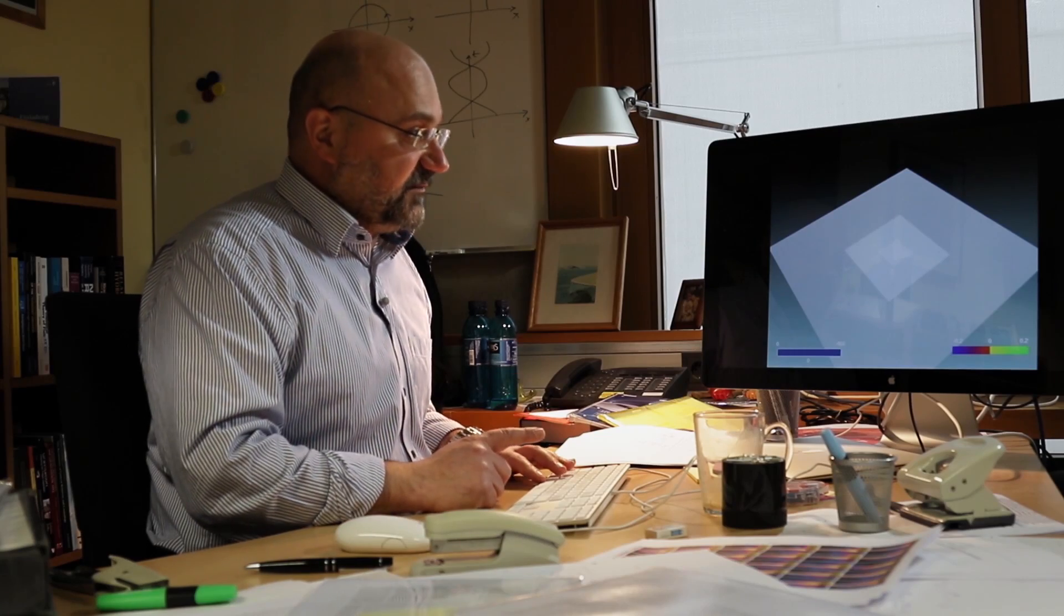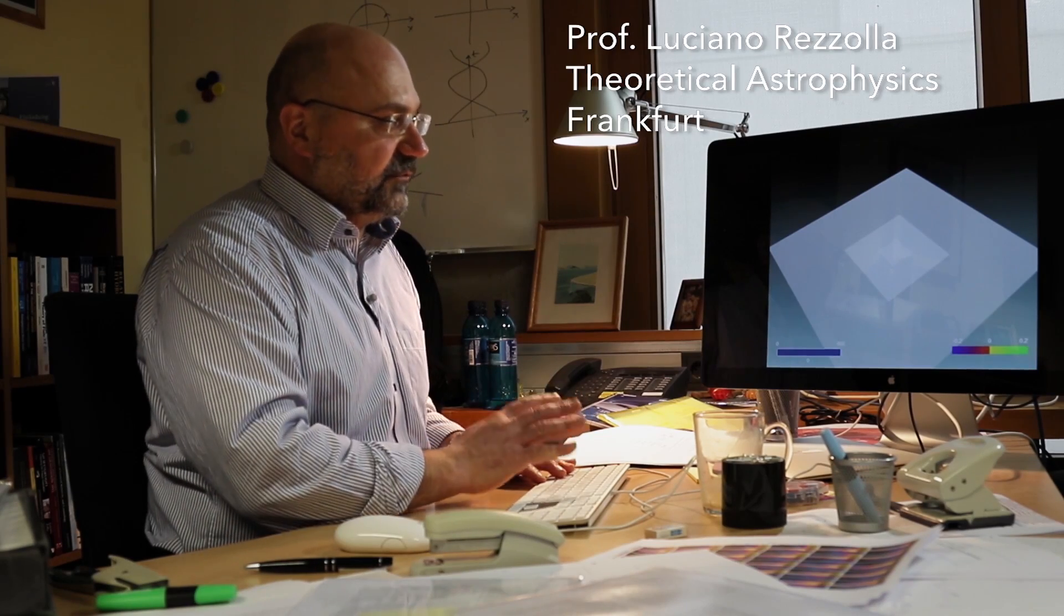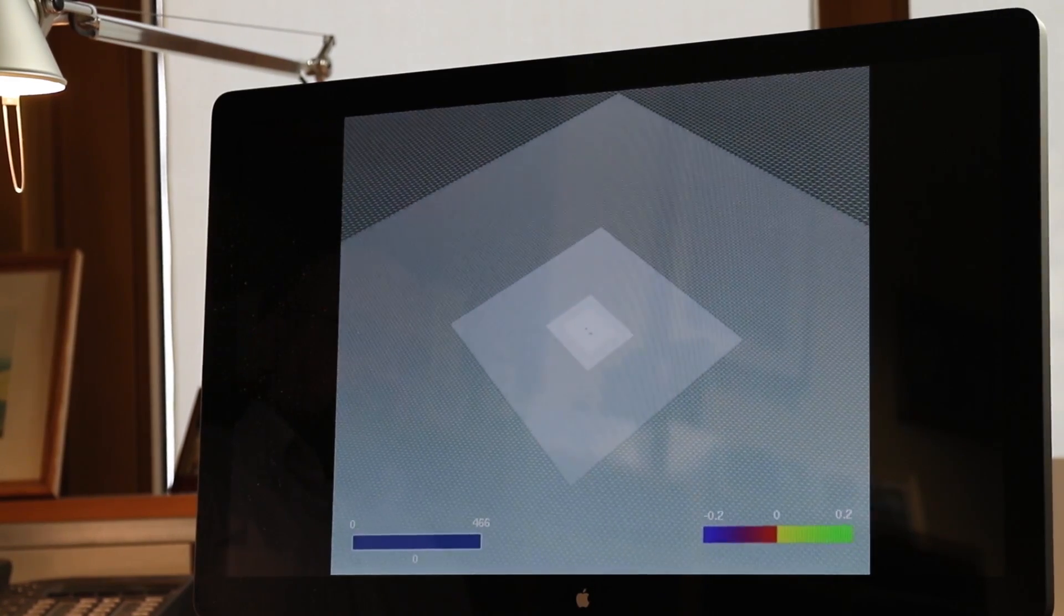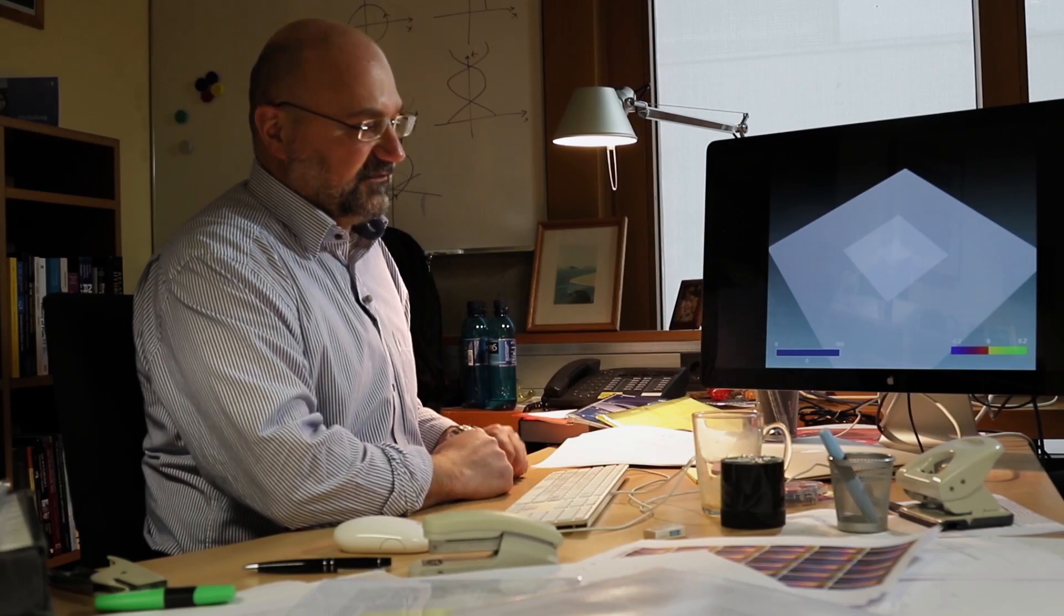So this is the rendering of a simulation. Here we are solving the Einstein's equations on the computer. So this is no computer graphic, this is real mathematics. You can look at mathematics as a series of numbers or you can look at mathematics in this way. It's the same. Still numbers behind this.